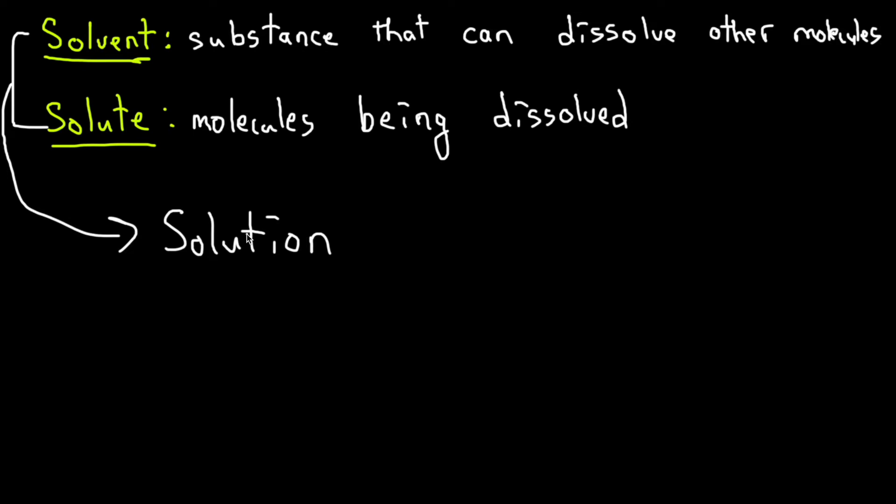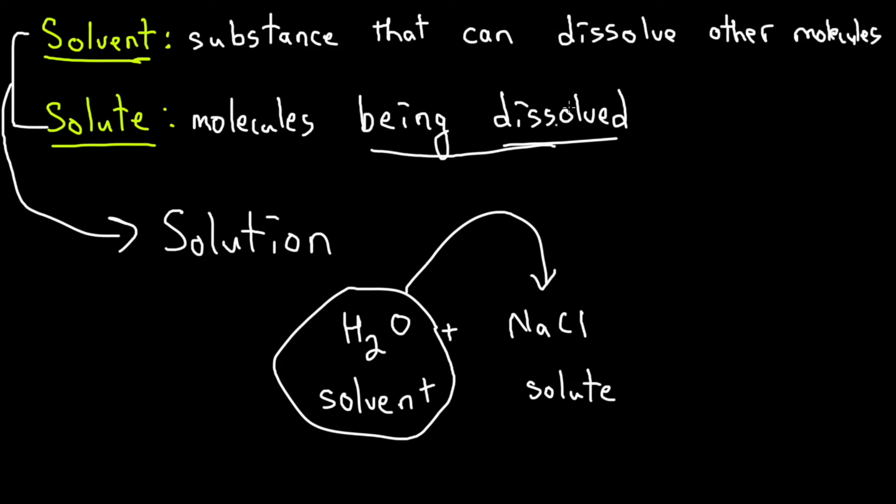The most classic case: you could have water and salt, NaCl. The water will be the solvent and NaCl will be the solute. Typically, the solvent is going to be in much greater concentration compared to the solute. The solvent has the capability to break down the sodium-chlorine bond, which is why the salt is called the solute—it's being dissolved—whereas the solvent does the dissolving.